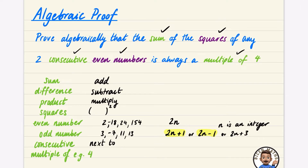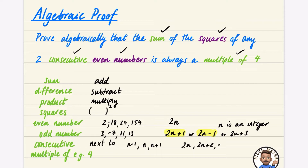Consecutive means next to each other. So you could have n, then n plus 1, and n minus 1 for the one before. If we're talking about consecutive even numbers, you might say you have 2n, and the next even number would be 2n plus 2.